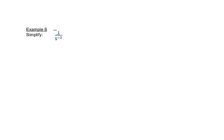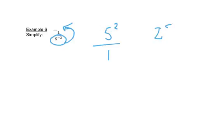Here we have 5 to the negative 2 on the bottom. A negative exponent just means move it, so if it's on the bottom, we're going to move it to the top. When we do, it becomes a positive exponent. We put 1 on the bottom to hold that spot. So 5 to the 2nd power is 25 over 1, which is just 25.